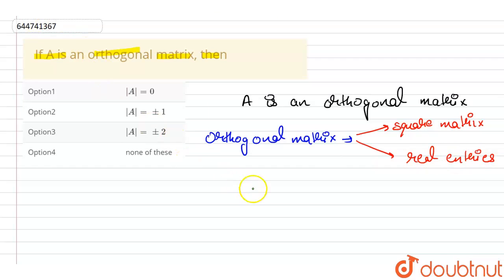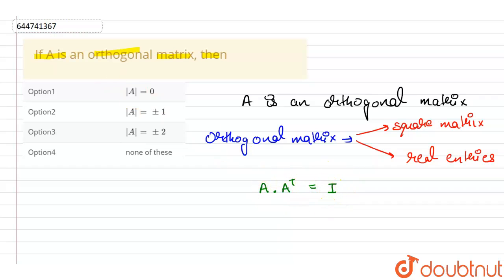If A is an orthogonal matrix, then A multiplied by A transpose equals I — that is, A into A transpose is equal to the identity matrix.